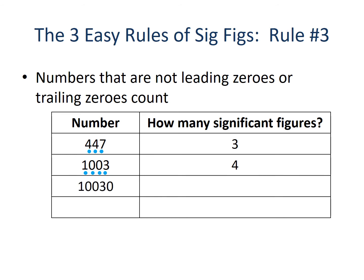Here we have 10030. Rule number three tells us that four of these numbers count towards our tally. But we also have a trailing zero — and rule number two deals with trailing zeros. Without the decimal that rule number two requires, we get rid of that trailing zero. So the one, the two middle zeros, and the three count towards our significant figures, for a total of four significant figures in 10030.